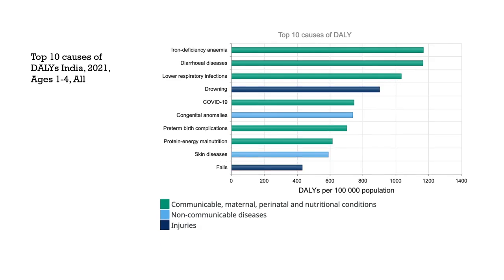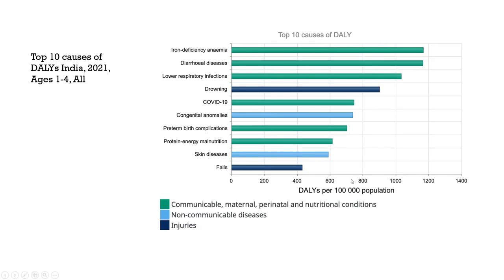Cirrhosis of the liver has been identified as one of the top 10 causes for male health in India based upon 2021 data. Looking at data on DALYs for ages 1 to 4, the pattern of diseases changes immediately compared to the all-India population. Iron deficiency anemia, diarrheal diseases, and lower respiratory infections appear as some of the top 10 causes. Drowning also appears as one of the important causes of DALYs for ages 1 to 4, which has a lot of relevance in the context of the surroundings within which the Indian population exists. Skin diseases, protein energy malnutrition, congenital anomalies, and preterm birth complications also appear.